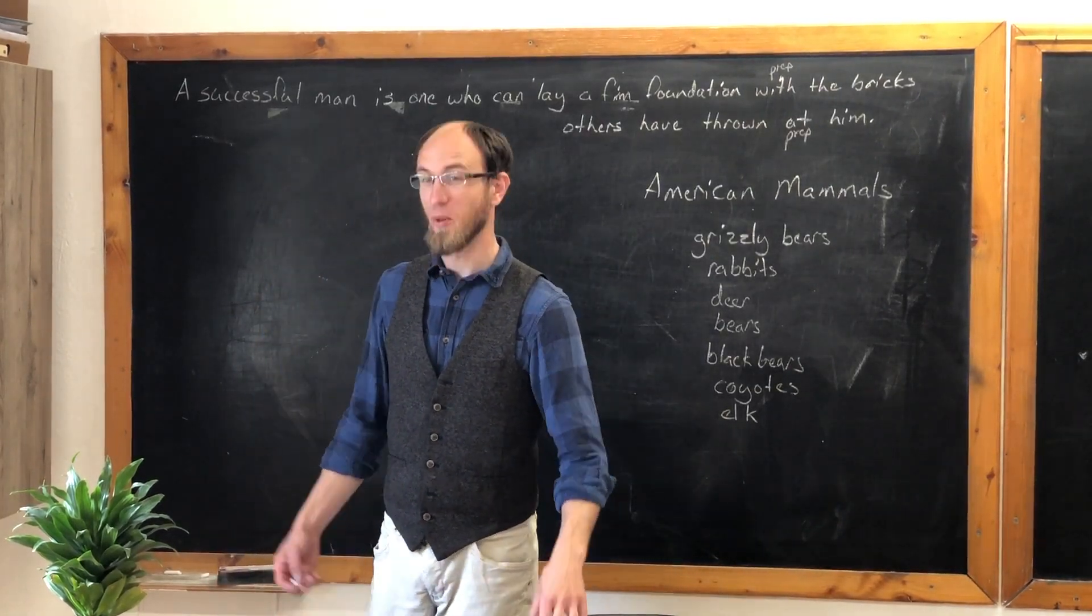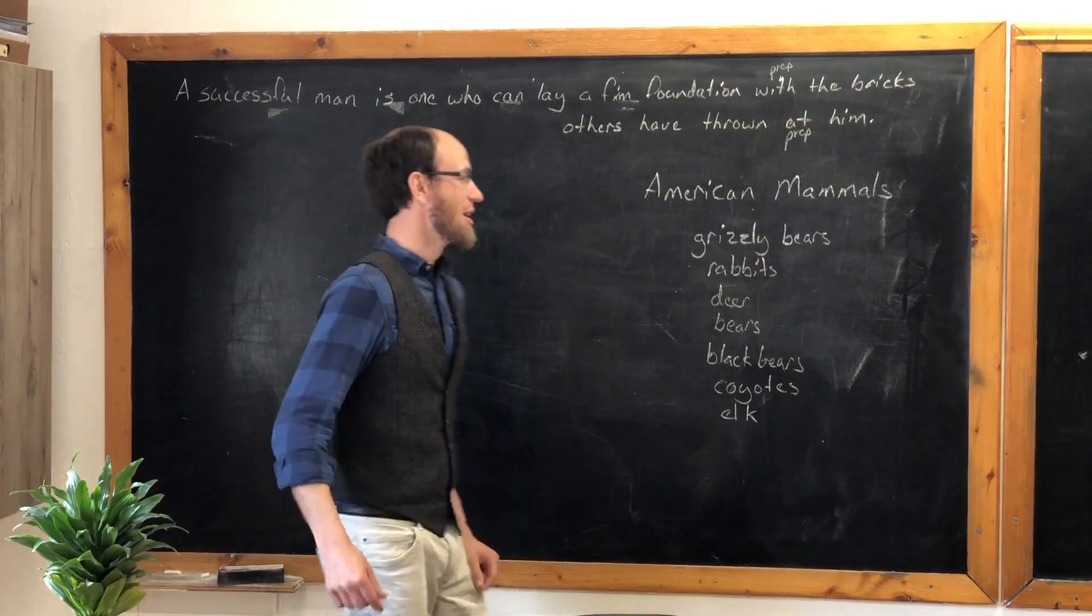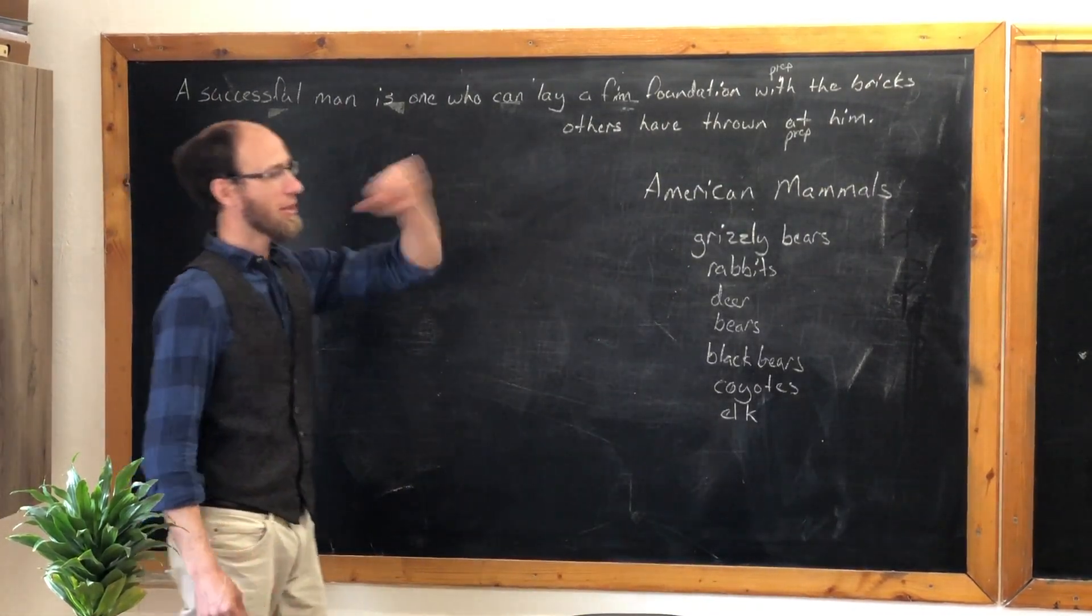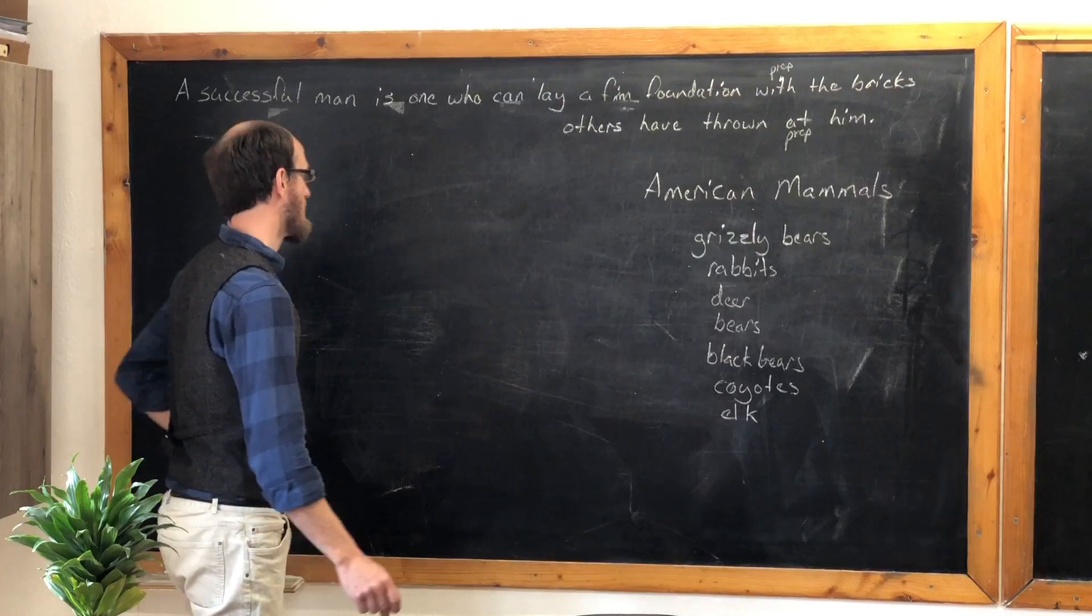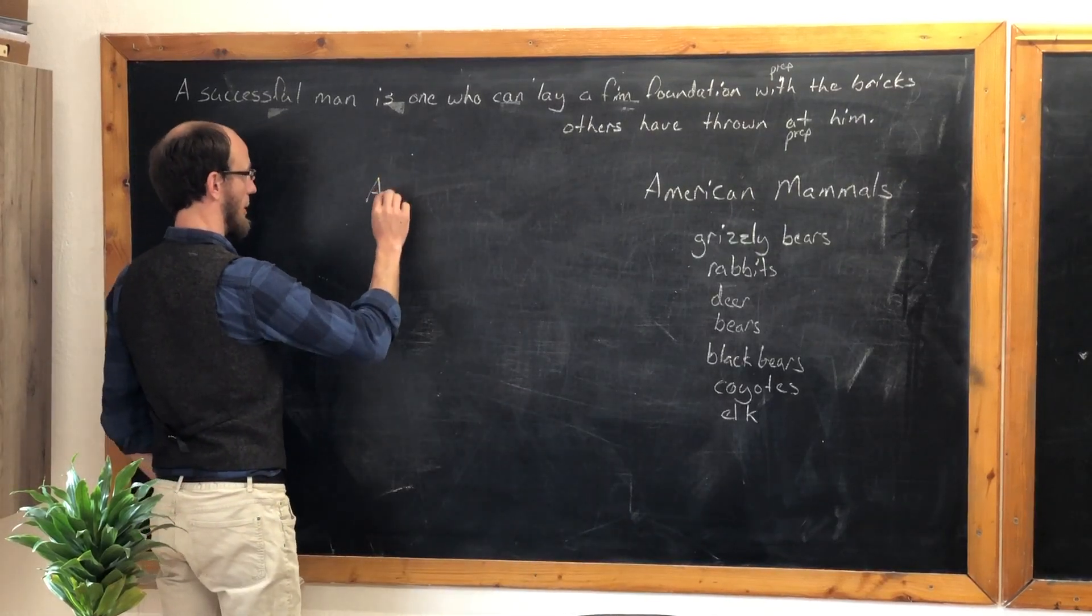Outlines. An outline is an orderly way to arrange your thoughts. Let's try to make an outline titled American Mammals with this set of information. So we'll put our title, American Mammals.